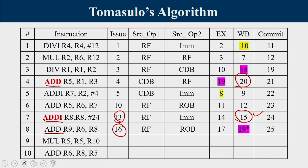However, there is a CDB conflict at cycle 18 — another instruction is already writing to CDB at that cycle. Per the round-robin arbitration, this instruction must hold its result and write to CDB at cycle 19 instead. Commit happens at cycle 25.